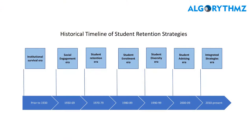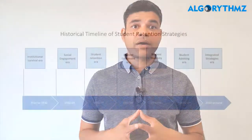From the 1930s to 1970s, institutes focused on social engagement. A lot of students coming from affluent families wanted to socially engage with people, and institutions wanted to create a social engagement framework so that they could admit more students into their universities for higher education.